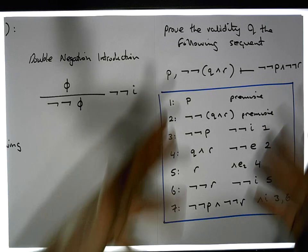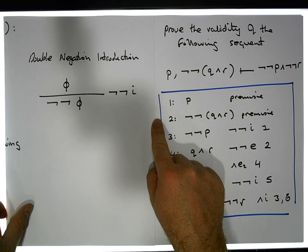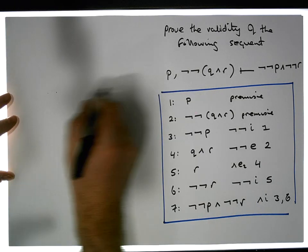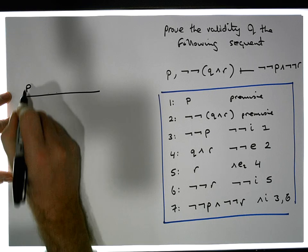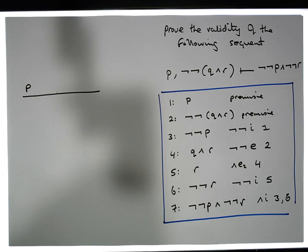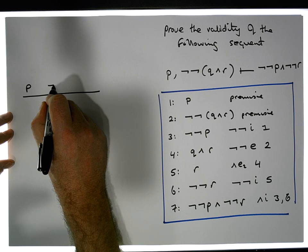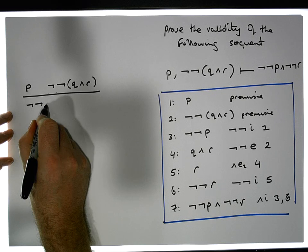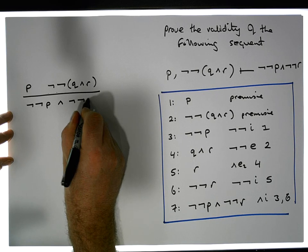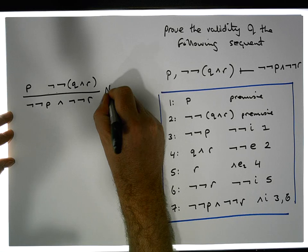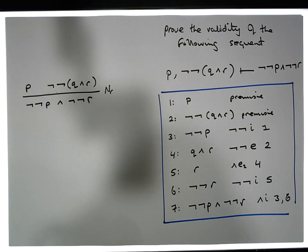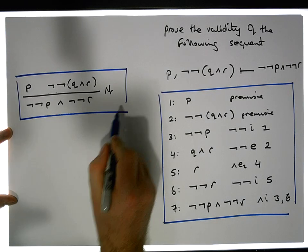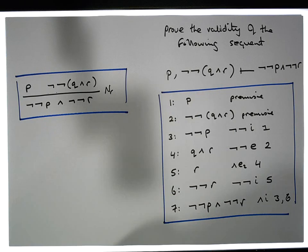We've effectively developed a new rule in our natural deduction system. The new rule is: if p is true and the double negation of (q ∧ r) is true, then we know the double negation of p ANDed with the double negation of r is true. We'll call it 'N or' — we can give it whatever symbol we want — but it's a new rule proven from the previous rules.